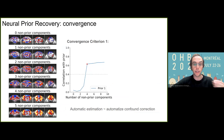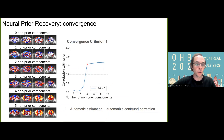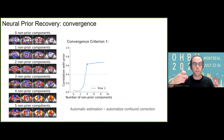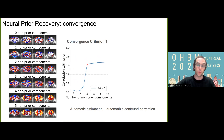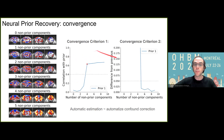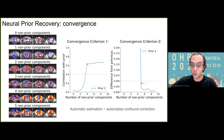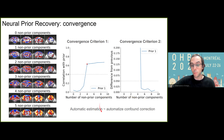I'm showing how this process can converge on a stable solution that recovers the prior. On the left, I'm showing the output for different iterations of NPR while increasing the number of non-prior components. After accounting for four other sources, we're effectively recovering the network of interest as the predominant remaining source within the residuals. On the right, I'm showing the correlation between the output and the prior component, which eventually reaches a plateau, showing successful recovery of this prior. This is the first criterion used for automatizing convergence and selecting the number of components. A second criterion is the difference between the current and previous output; when this difference is below a threshold for sufficient iterations, we assess convergence. With these two criteria, we can automatically estimate the number of components and automatize confound correction.